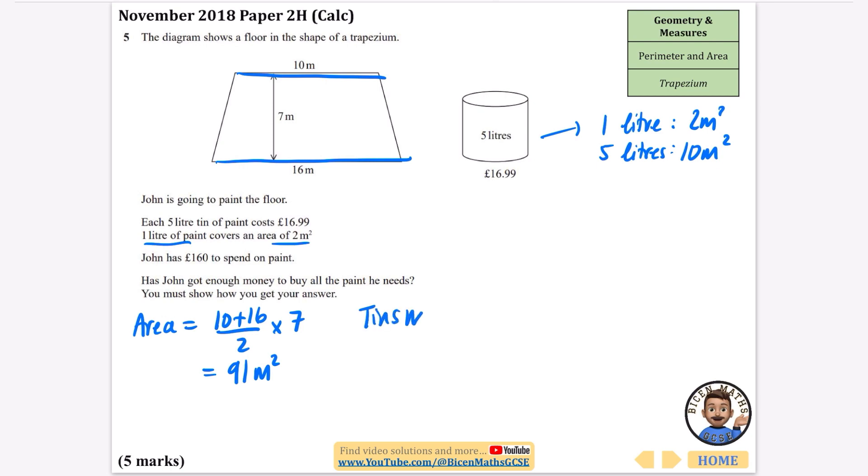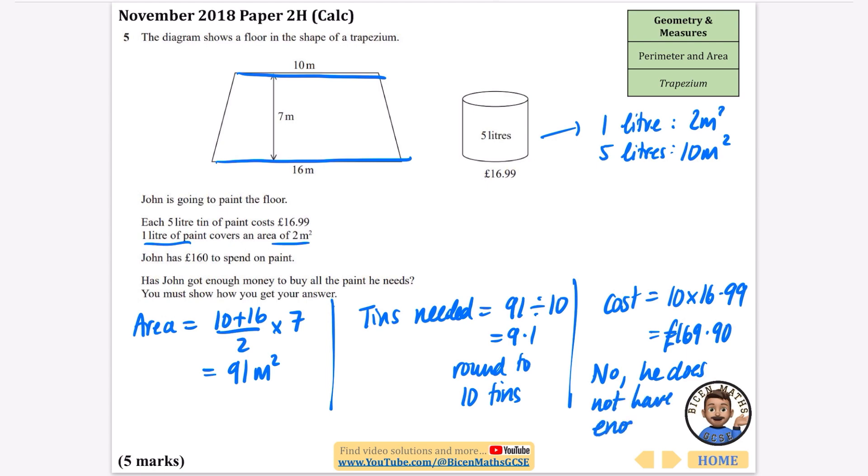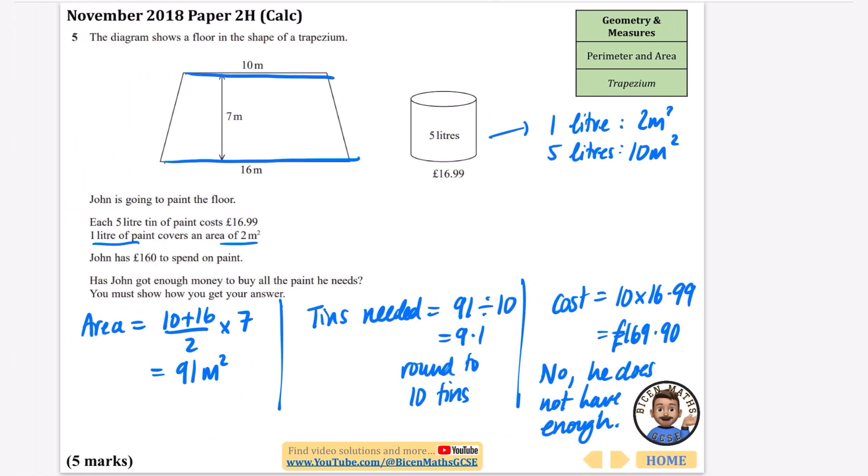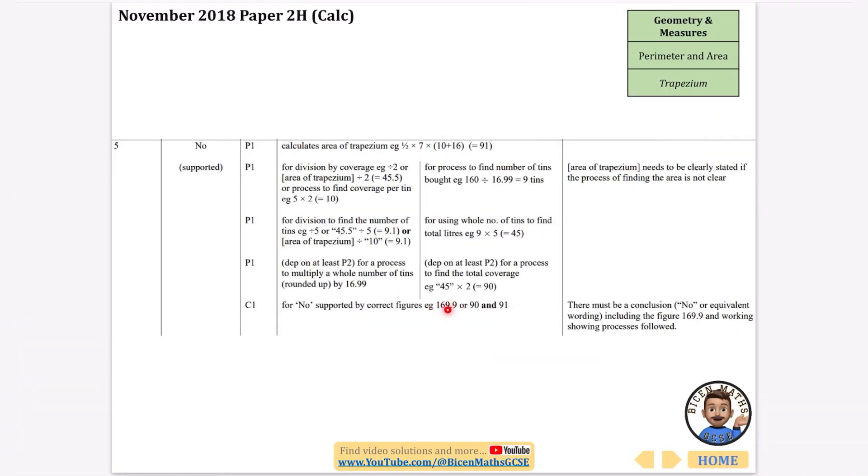The number of tins needed is 91 divided by 10, which is 9.1 tins, so round up to 10 tins. The cost is 10 times £16.99, which is £169.90. No, he does not have enough money because he only has £160. Yeah, £169.90 was the cost, so definitely no.